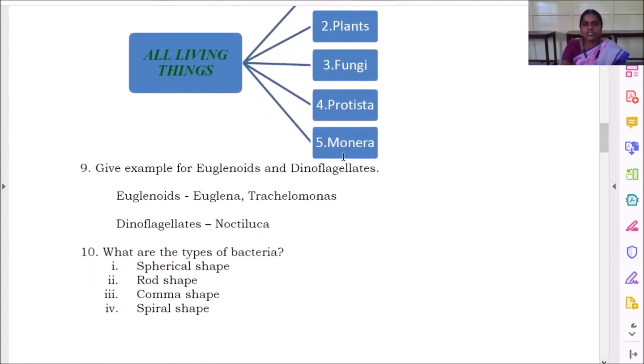Euglenoids and dinoflagellates. What are the examples? Euglenoids - euglena, trachelomonas. Dinoflagellates - noctiluca.